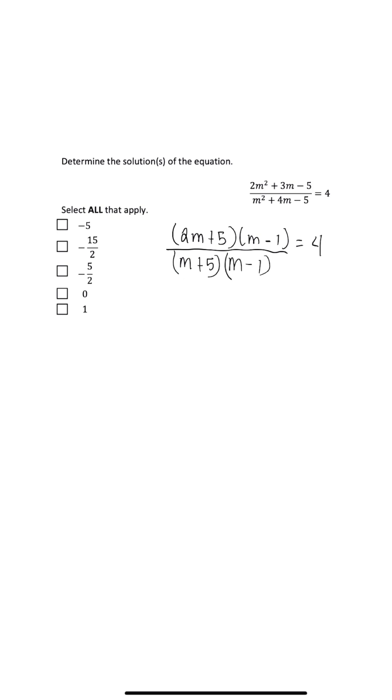Because this is a fraction, we can cancel out common factors. So m minus 1 cancels out with itself. Now we're left with 2m plus 5 divided by m plus 5 is equal to 4.